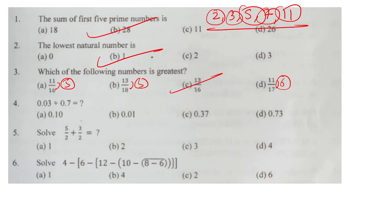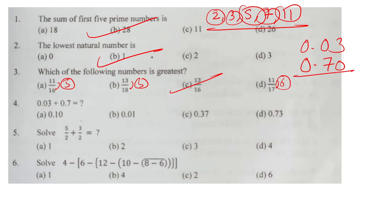Question number four: zero point seven three — so option number D is the correct answer.